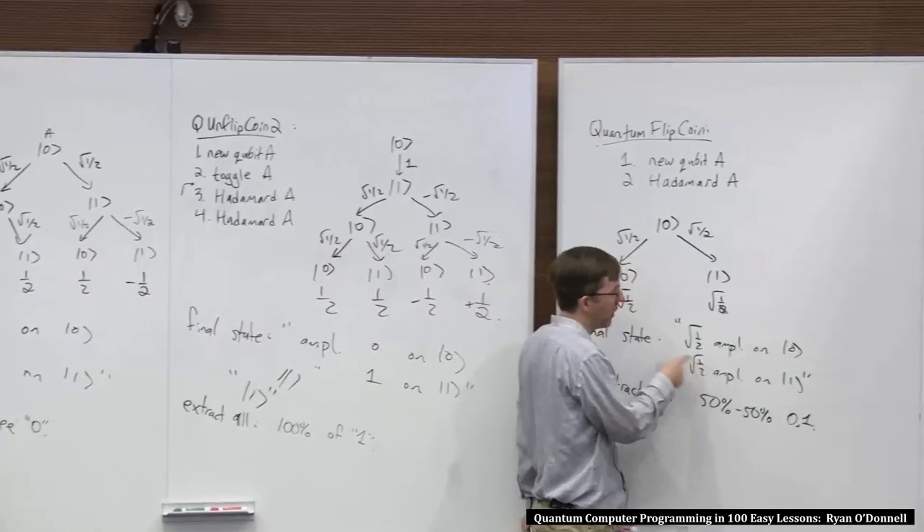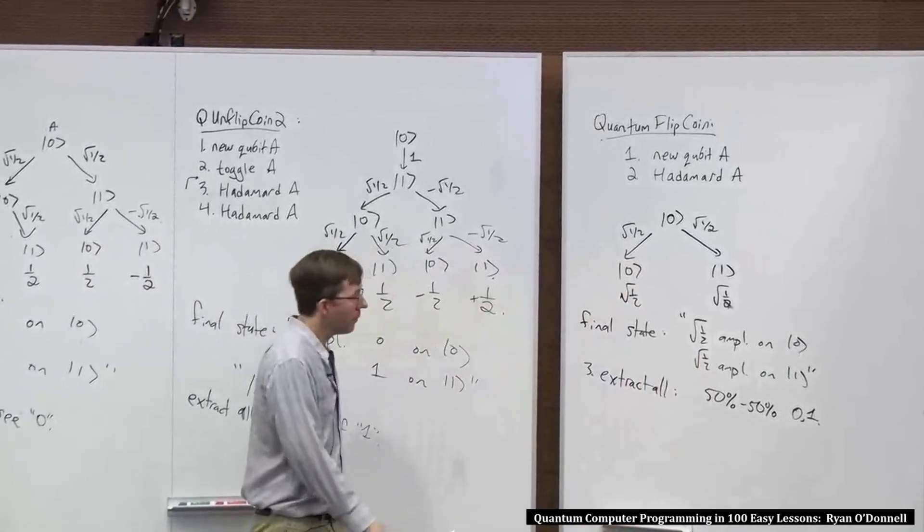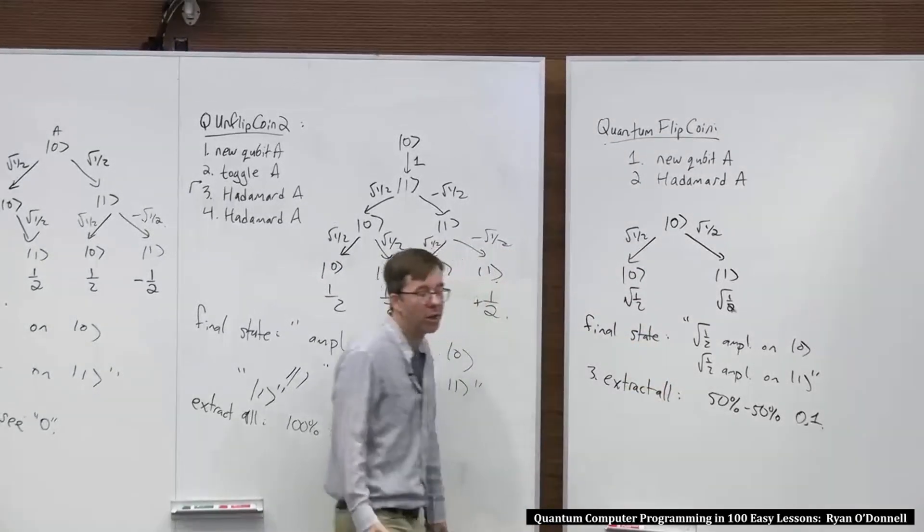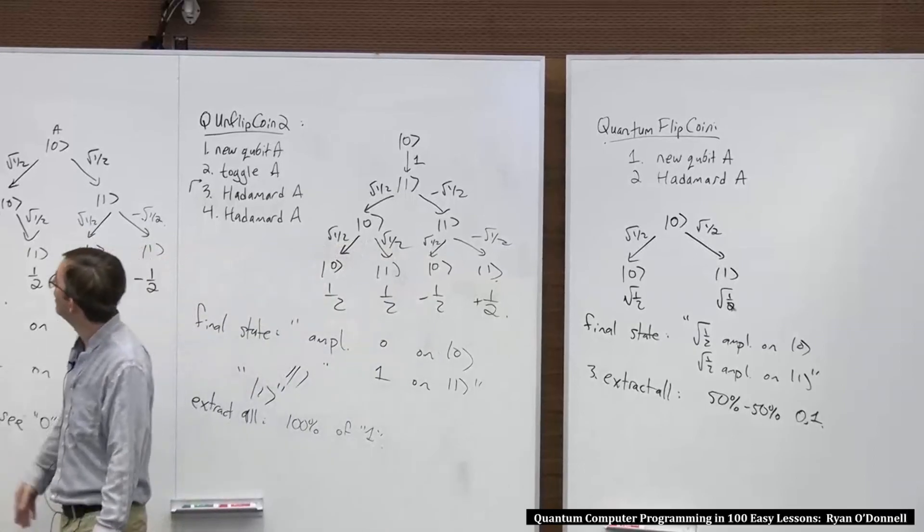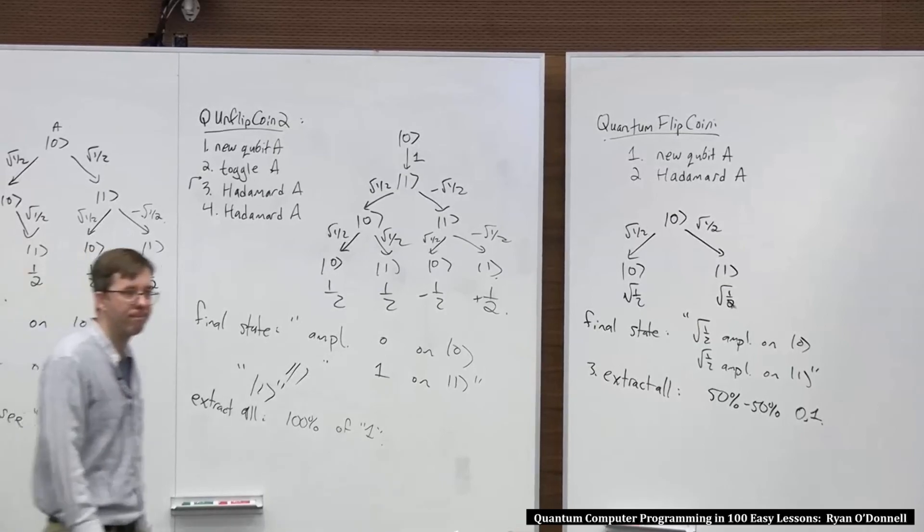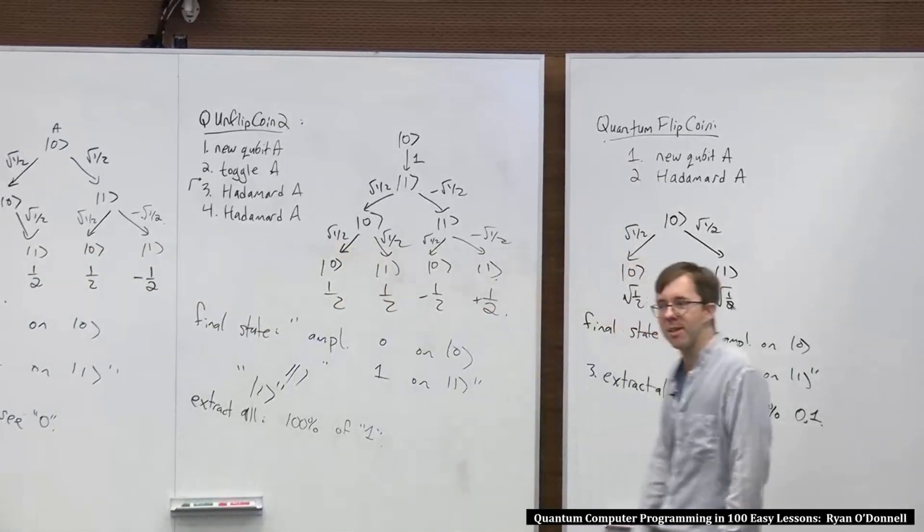And these kinds of experiments are a way to verify that because, it hasn't decided if it's 0 or 1 yet because if you start in this state and do another Hadamard, it goes to 100% 0 or all amplitude on 0. But if you start in this state and do another Hadamard, it goes to all its amplitude on 1. So that's the way it is.